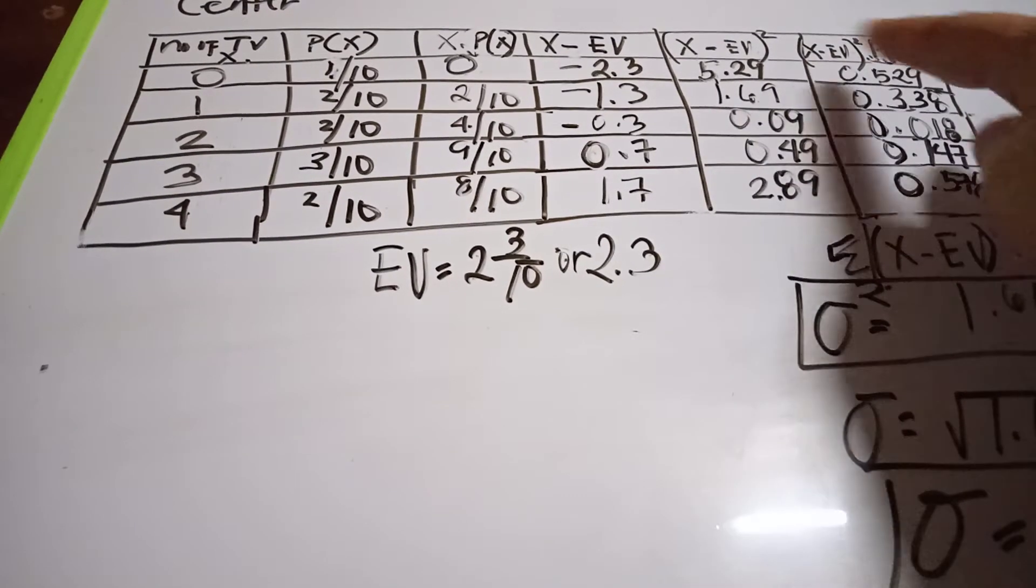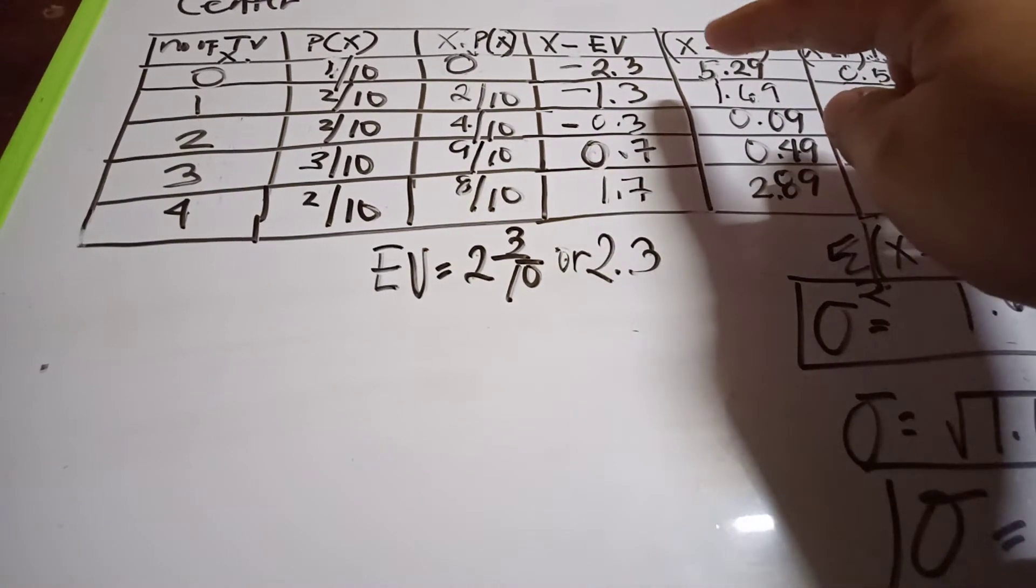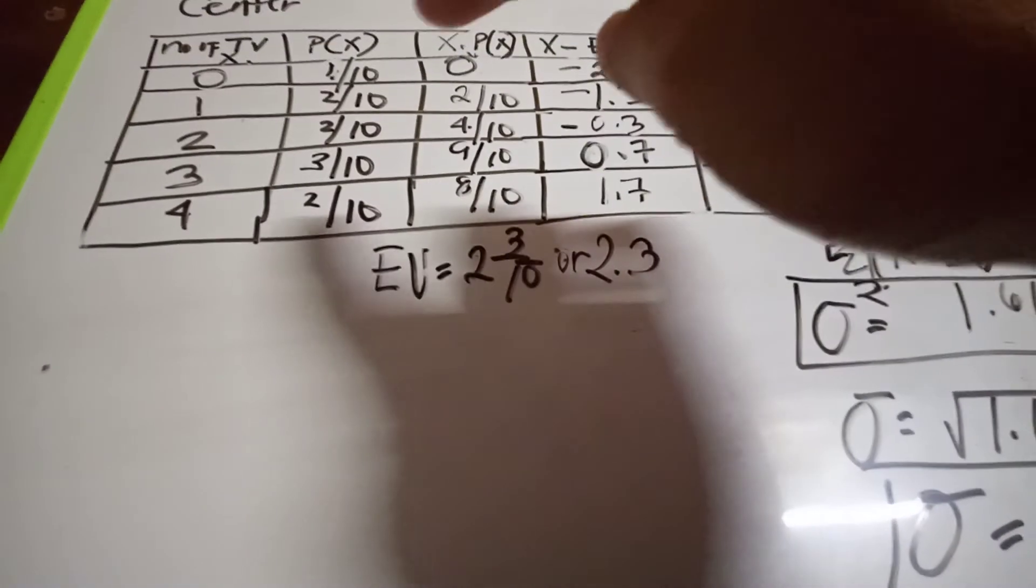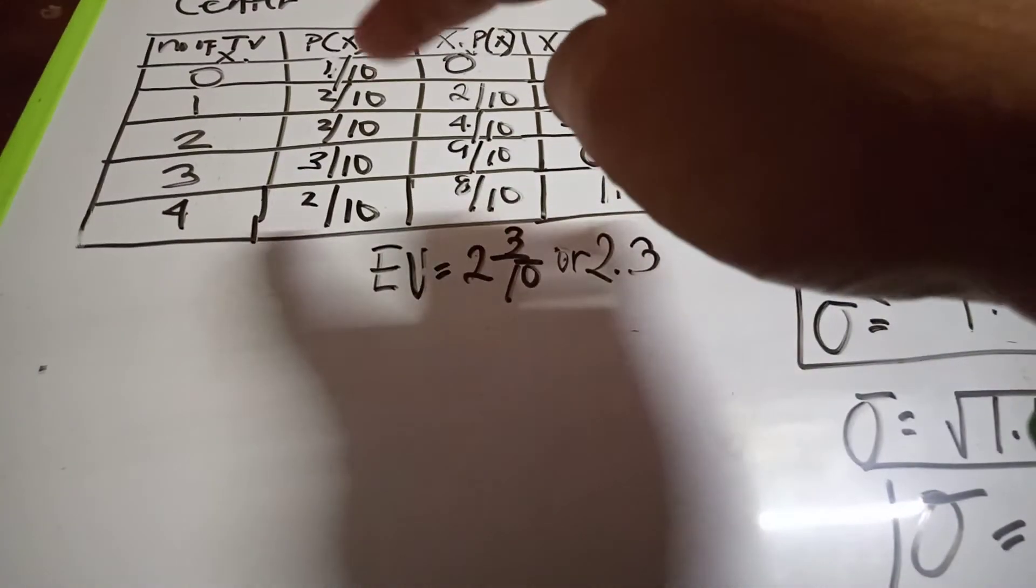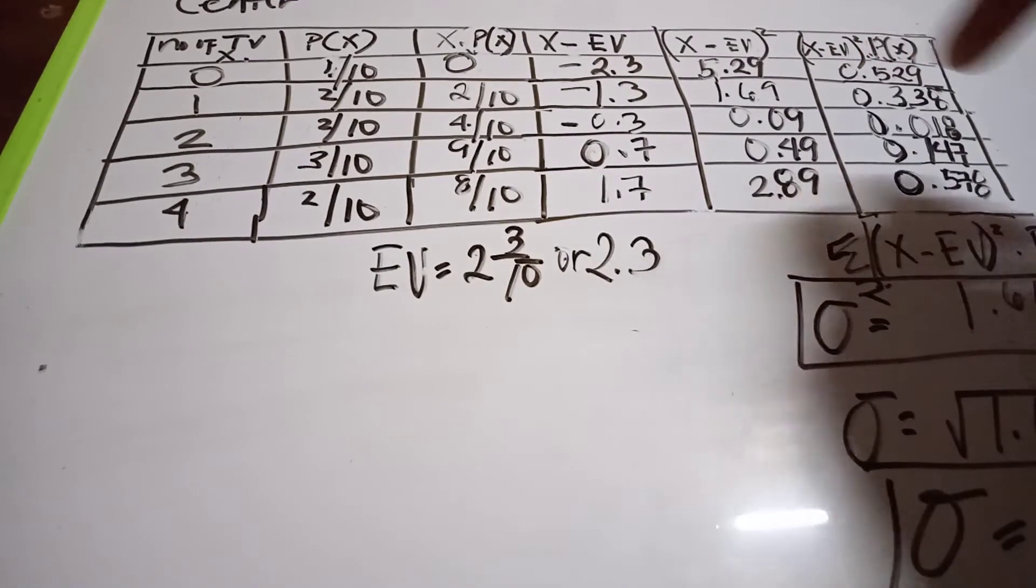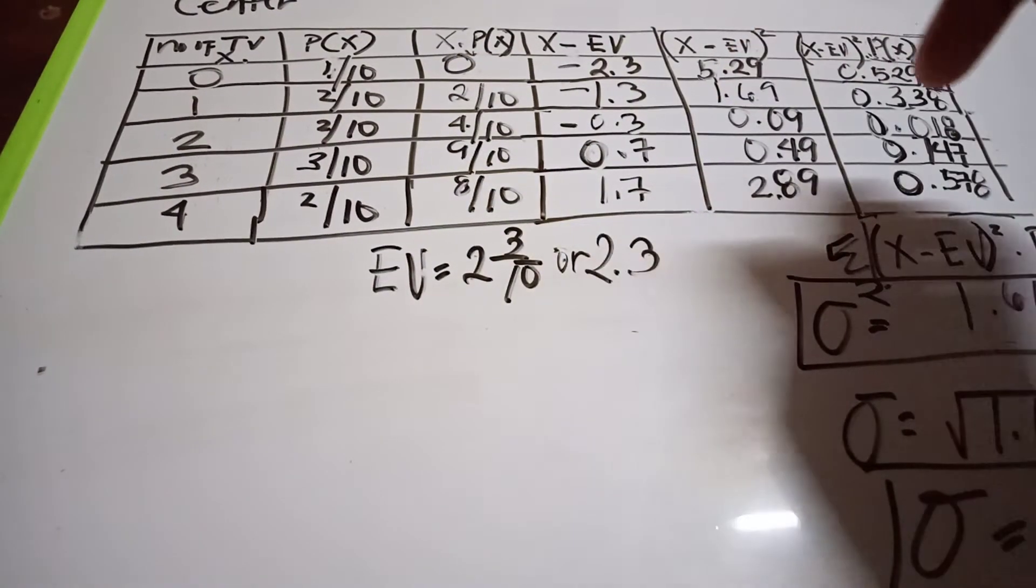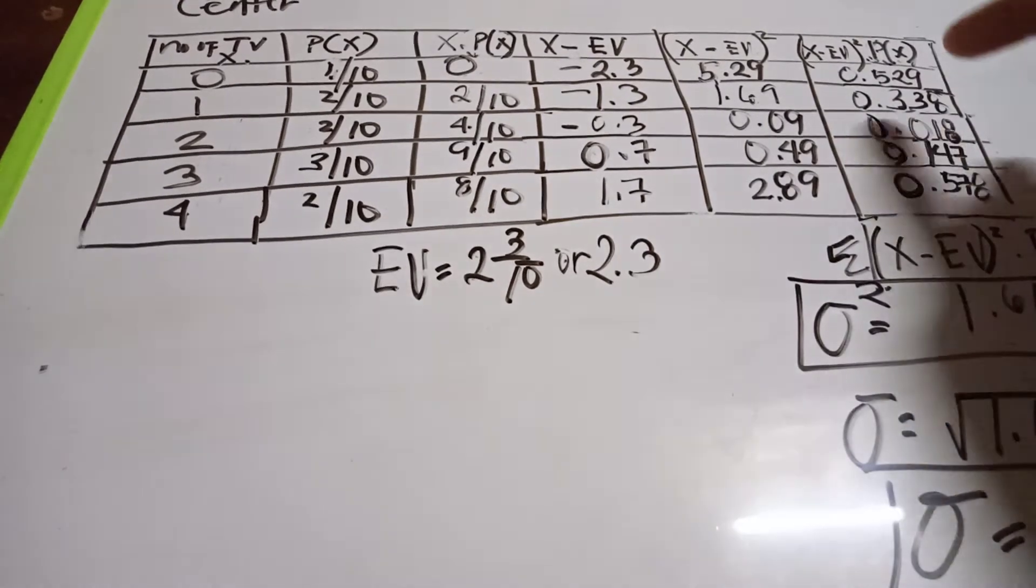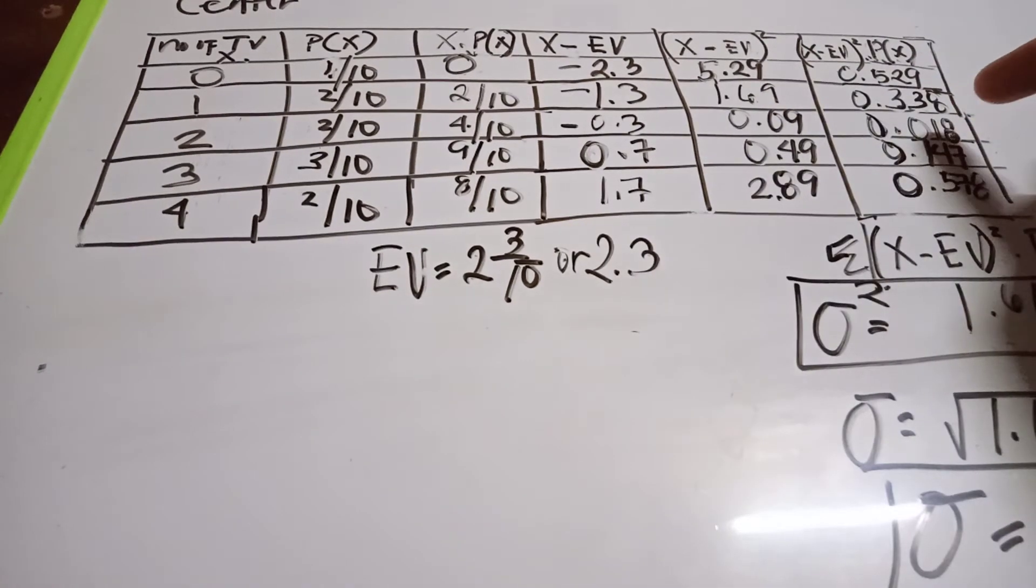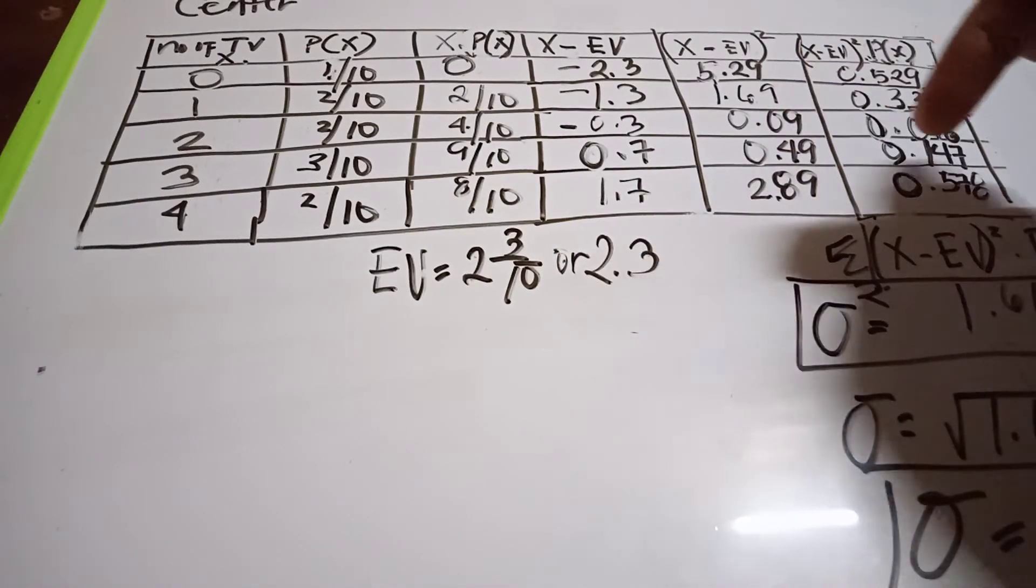This is the formula for the variance: summation of P(x) multiplied by (x-EV)². So one over ten times 5.29 equals 0.529. Two over ten times 1.69 equals 0.338. Two over ten times 0.09 equals 0.018. Three over ten times 0.49 equals 0.147.